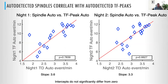What's exciting about this is that these TF peaks correlate very well with traditional spindles. For two nights of these 17 subjects, we get identical correlations, very close in slope — about three times — and in both cases the intercepts don't differ from zero. So this reliably varies with traditional spindle detection.